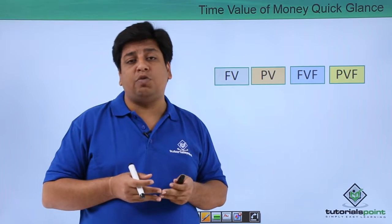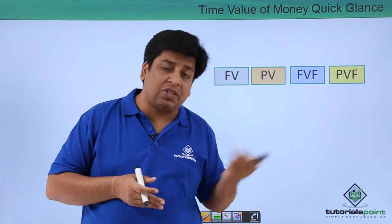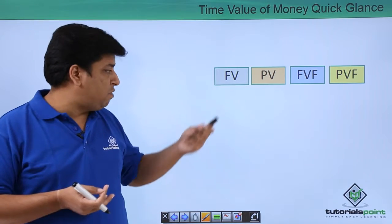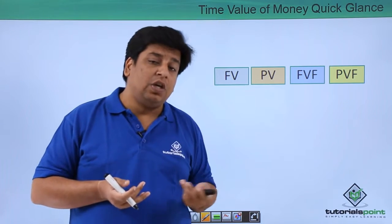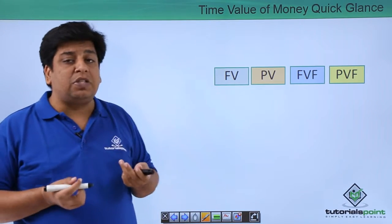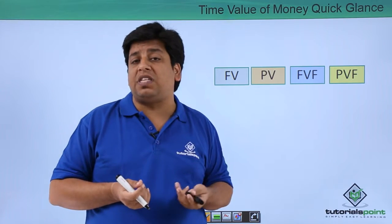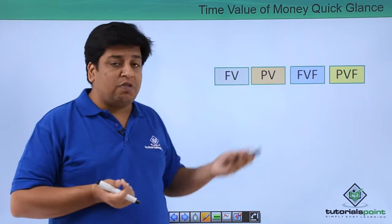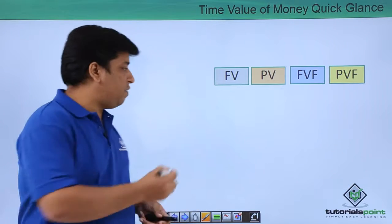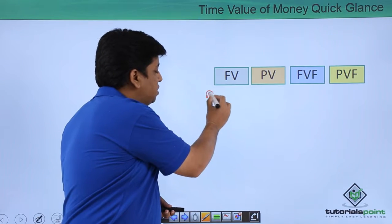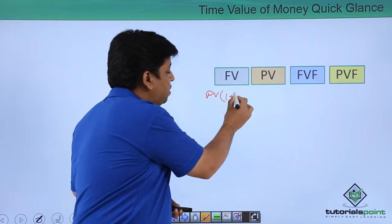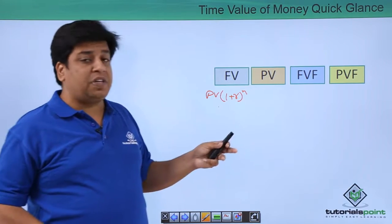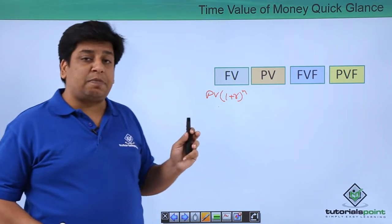If you are trying to understand the value of an amount maybe three years down the line, you will use the future value formula: Future Value = Present Value × (1 + r)^n, where n is the number of years and r is your expected rate of return or compounding rate.